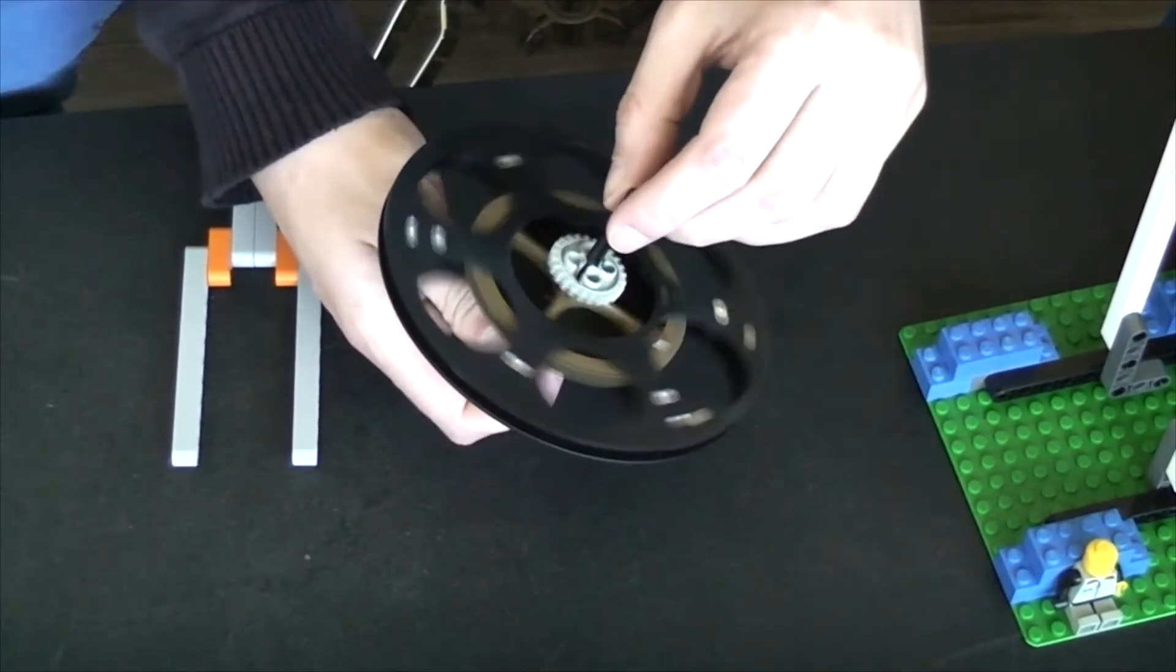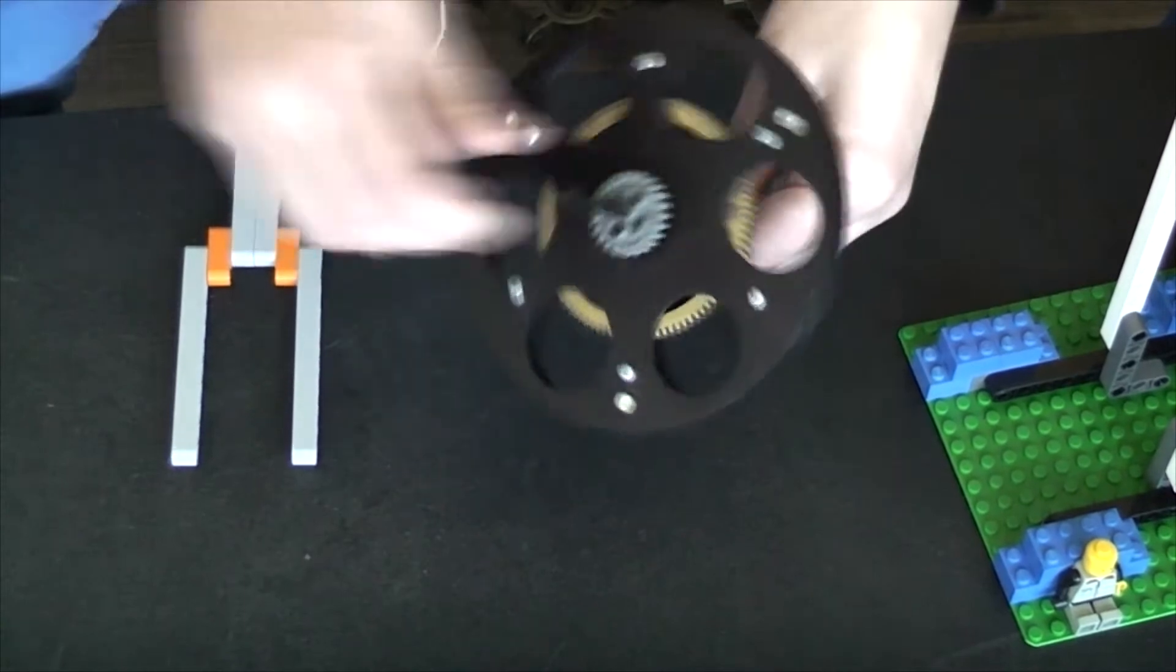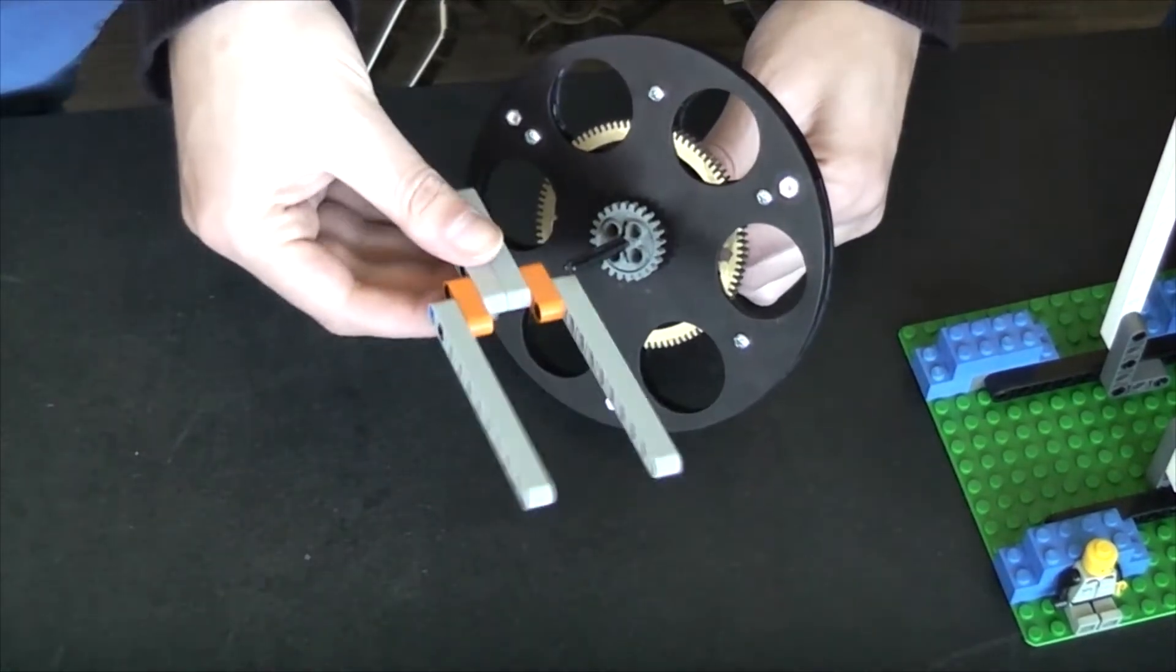My initial idea was to make a ratchet mechanism on the flywheel, which is driven by this swinging arm, kind of like a pendulum clock.